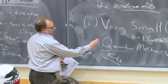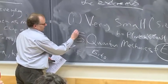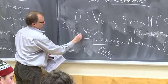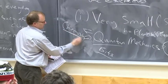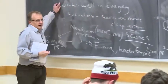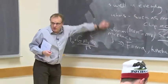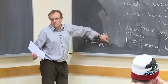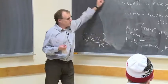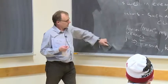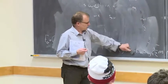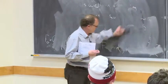Quantum mechanics basically explains chemistry — all of chemistry, pretty much. Chemistry is the physics of electrons. If you understand what electrons do, then you can understand chemistry.